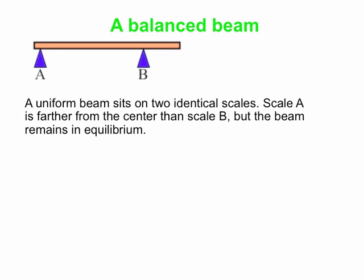We'll look at this particular example for the rest of the video. We have a uniform beam sitting on identical scales. Scale A is close to the left end of the board, and scale B is about halfway out from the center to the right end. So scale A is farther from the center of the beam than scale B. The beam is in equilibrium — at rest and staying at rest. Which scale shows a higher reading? We'll go through and exhaustively figure out what these scale readings are.